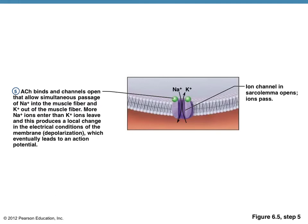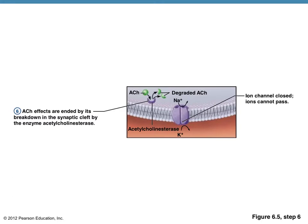When the ACH binds to the receptor, that allows the sodium gates to open up. There's a sodium-potassium pump involved through active transport, meaning you actually have to use ATP — energy the body makes from food and oxygen. We don't need to know the specifics about the sodium-potassium pump, but the important thing is that sodium rushes into the muscle cell, which stimulates a brand-new action potential in the muscle.